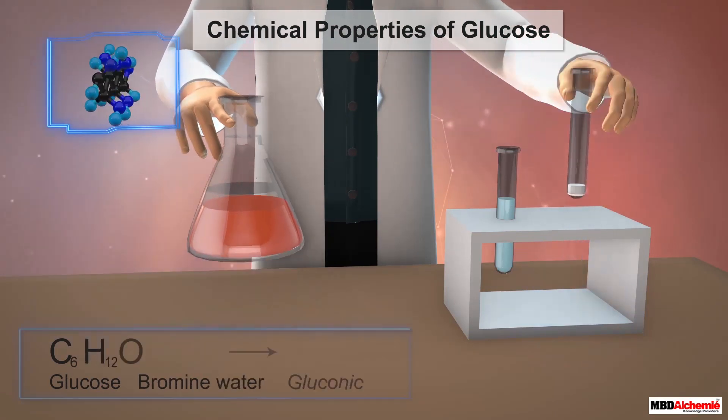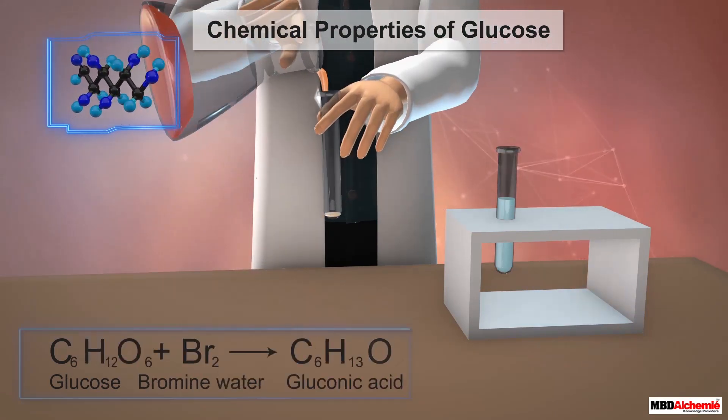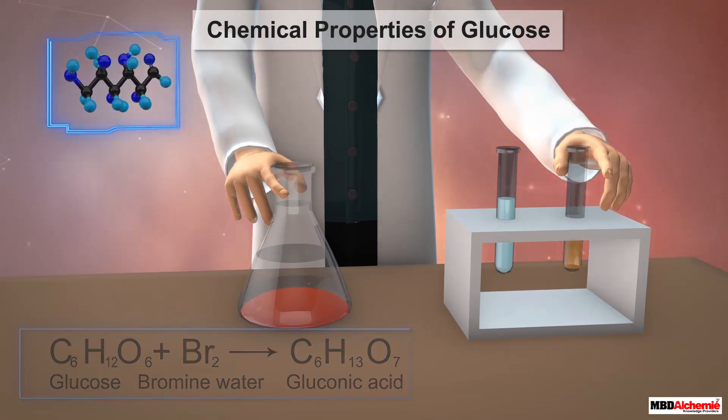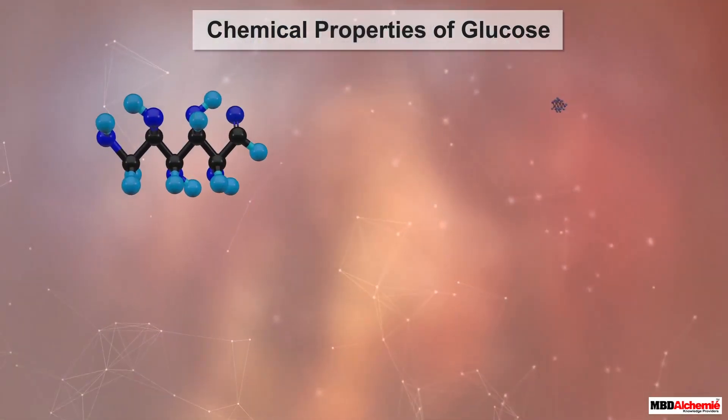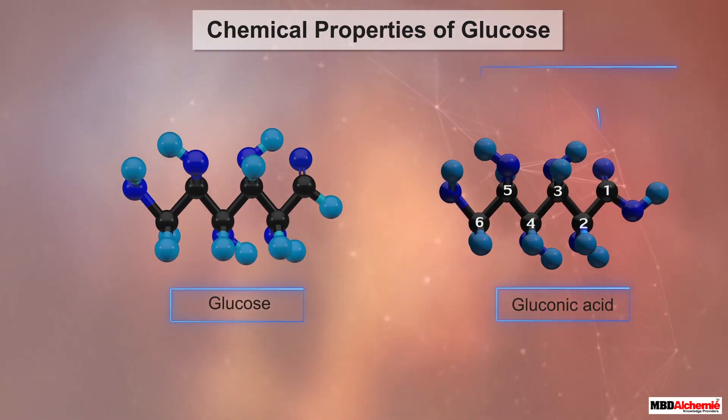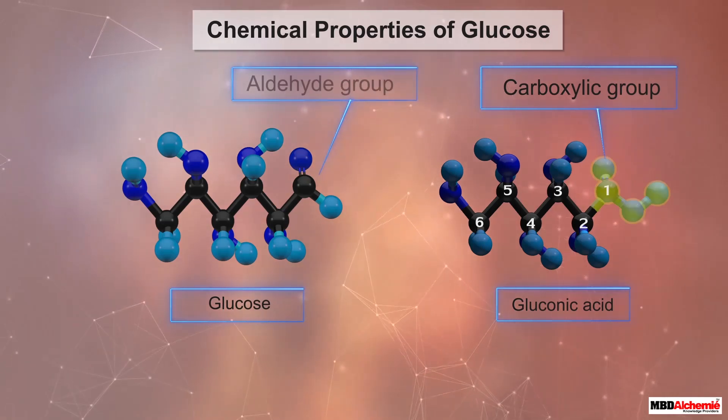Also, glucose on reacting with a mild oxidizing agent like bromine water oxidizes to gluconic acid. Gluconic acid is a carboxylic acid with six carbon atoms in its molecule. This suggests that the carbonyl group present in glucose is an aldehyde group.